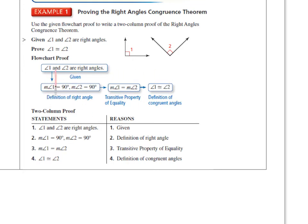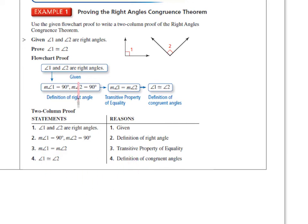Then you put an arrowhead to your second step. You could go across — it doesn't really matter. Typically we start off going down, then move across. Next, I put the measure of angle 1 is 90 and the measure of angle 2 is 90, with the reason underneath the box. Arrow to the next step, the reason underneath. Arrow to the next step — our statement's in the box and our reason is written underneath. So that's a flow chart proof. You can see how it relates to a two-column proof — it just makes it a little more visual so you can see the progression.